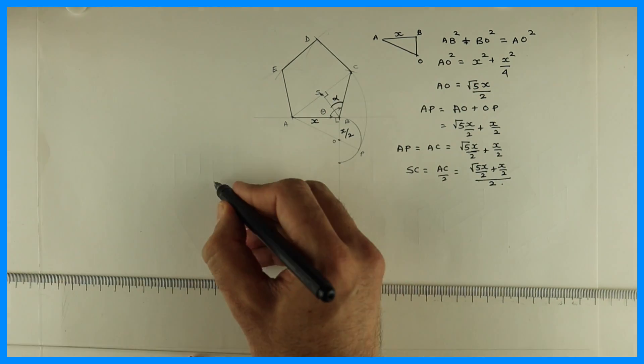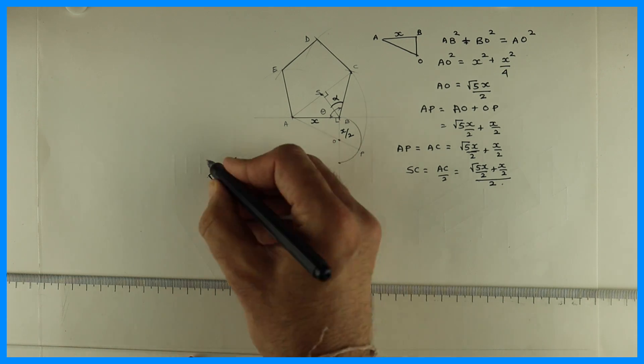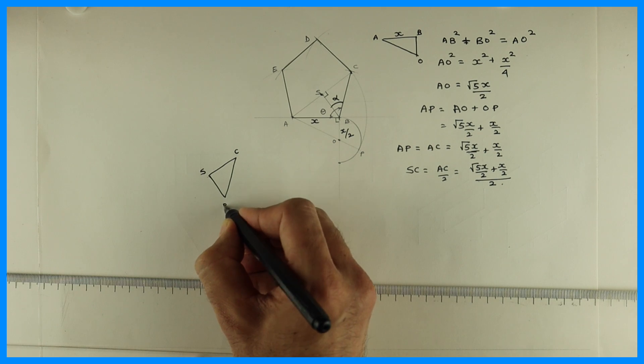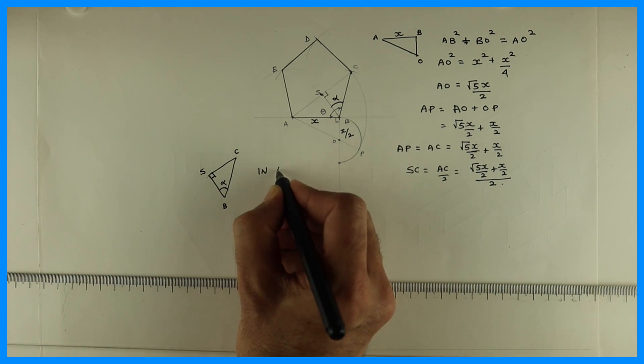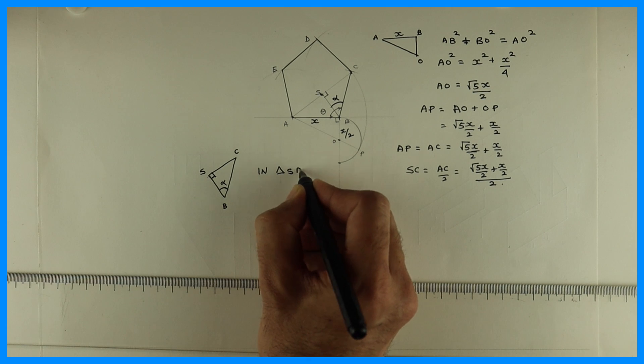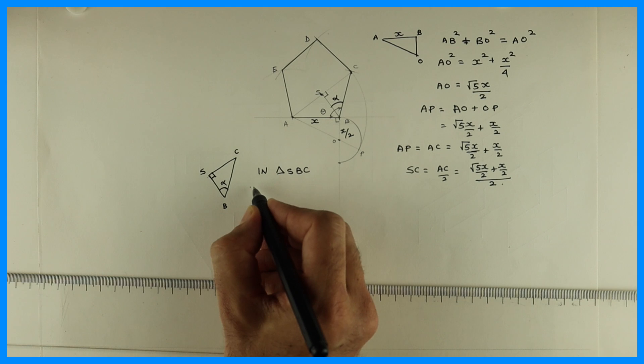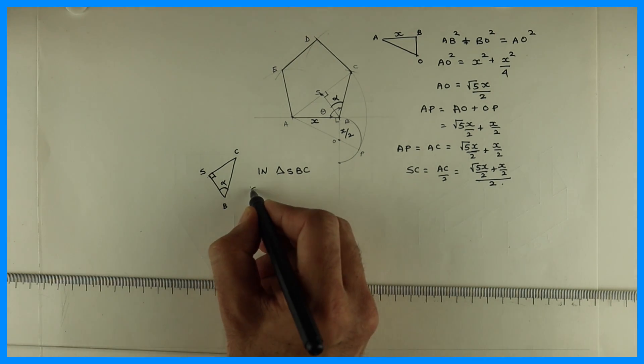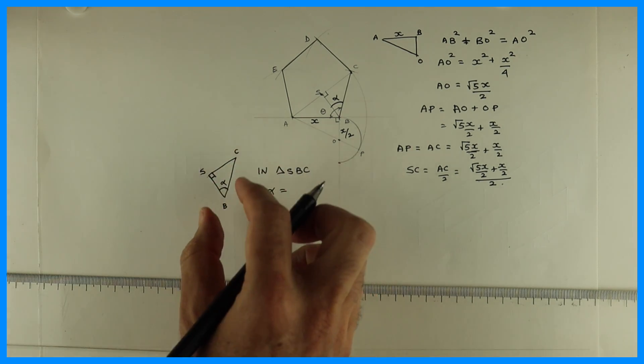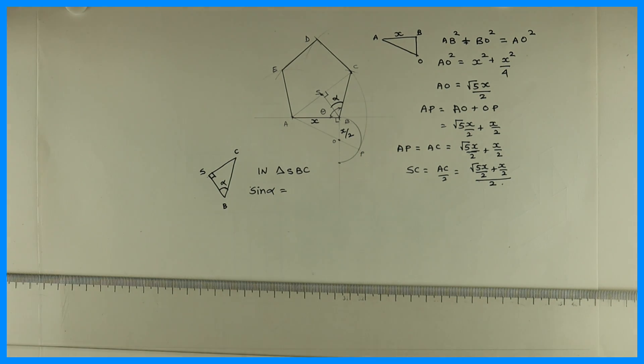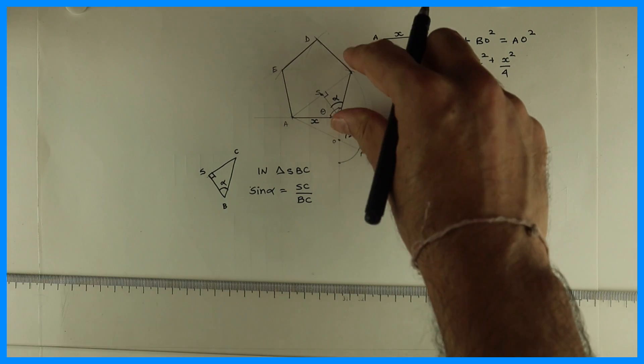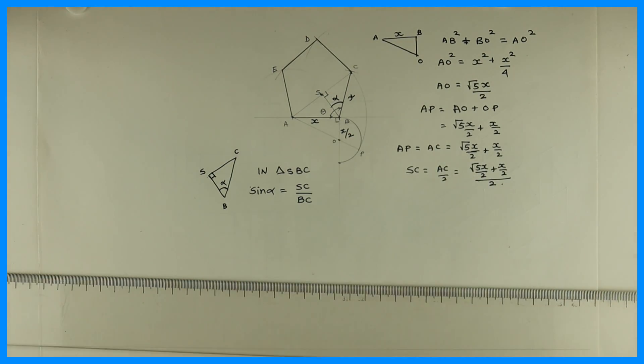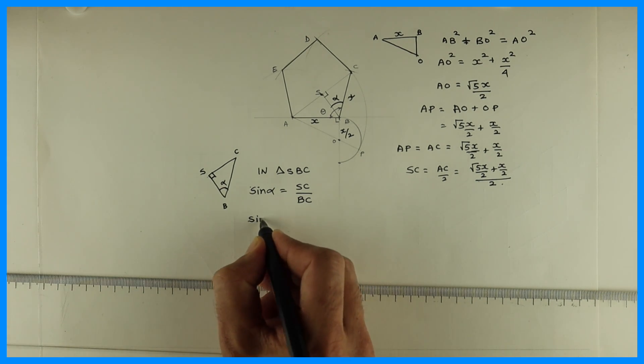Let's say this angle is alpha. So we'll take this SCB. This is 90 degrees. This is alpha. Again we'll apply Pythagoras in this. So in triangle SBC, we'll write sin alpha. Sin alpha is equal to what? SC upon BC. SC is how much? This BC is X. So sin alpha is equal to...